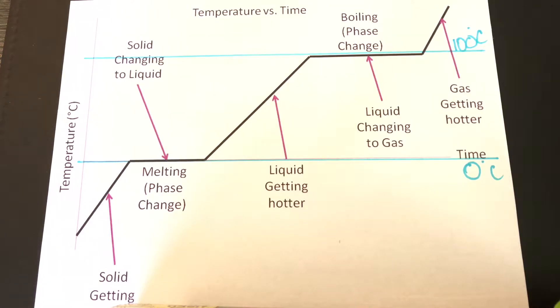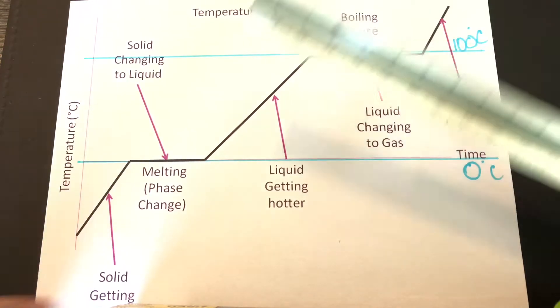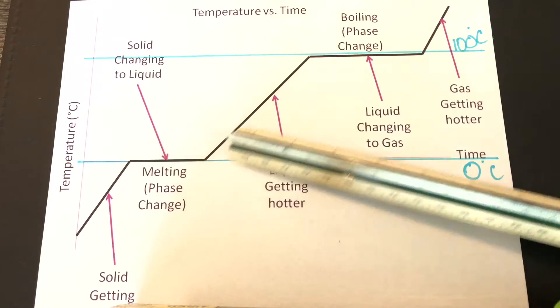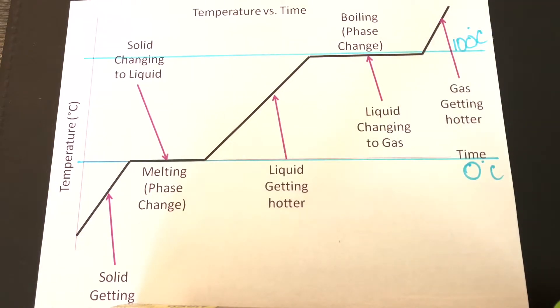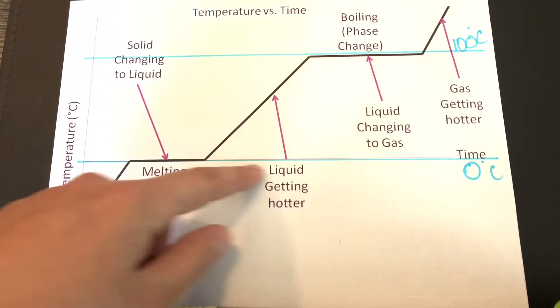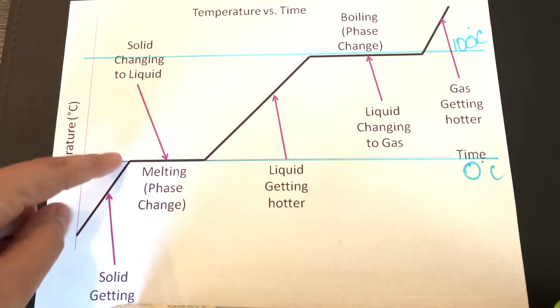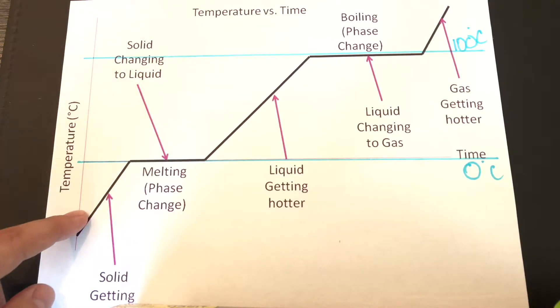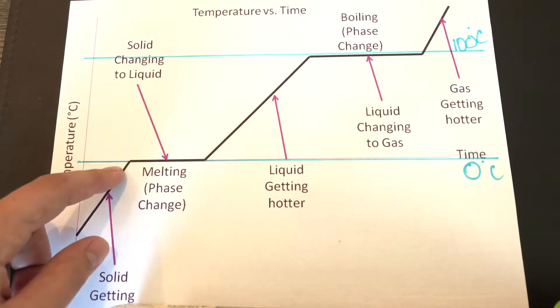Now if you notice over here we have three areas that are sort of increasing, right? These areas are going to be called the heating phase. So zero degrees Celsius is right here. What do you think this line is going to be? Solid, liquid, or gas? If you said solid, you would be right. We have a solid phase right here.